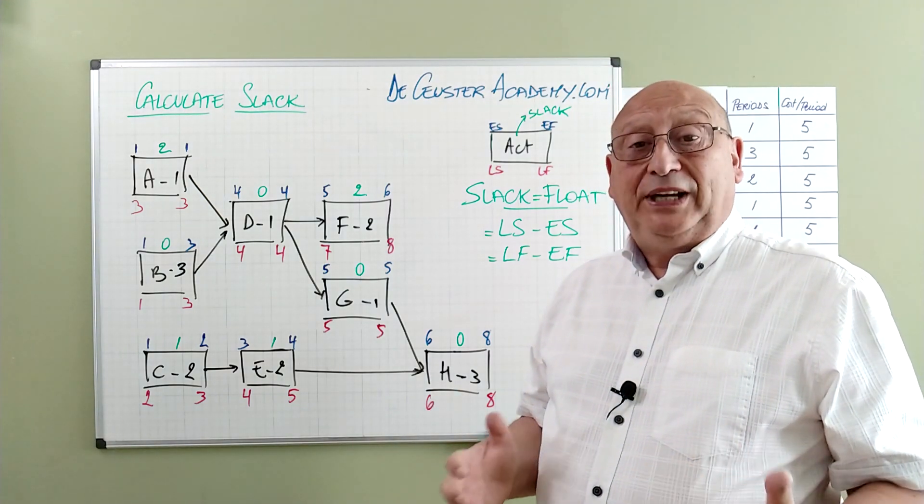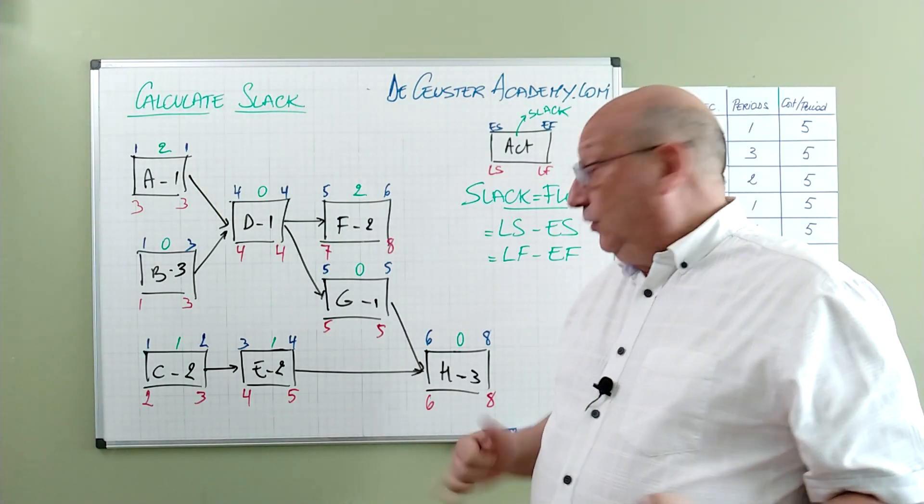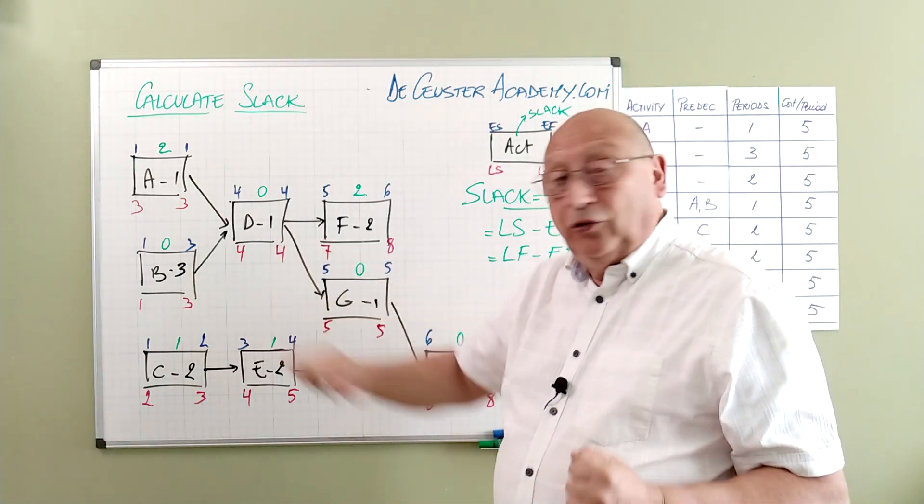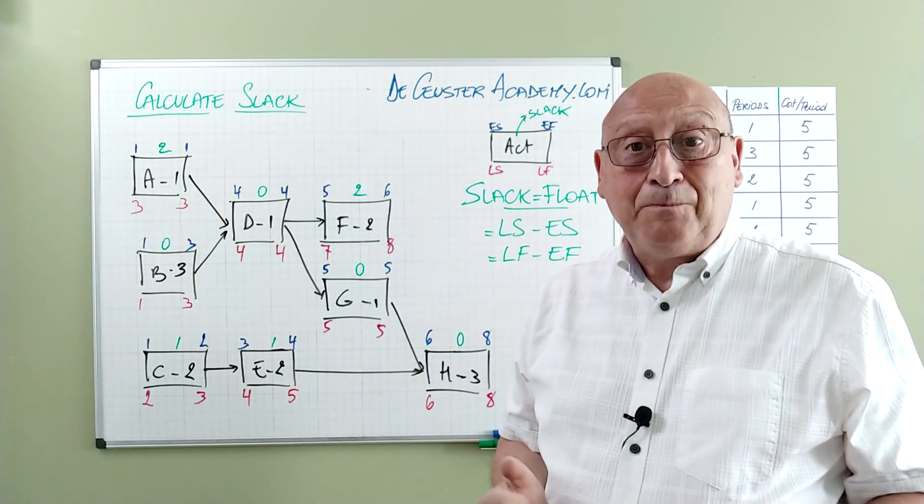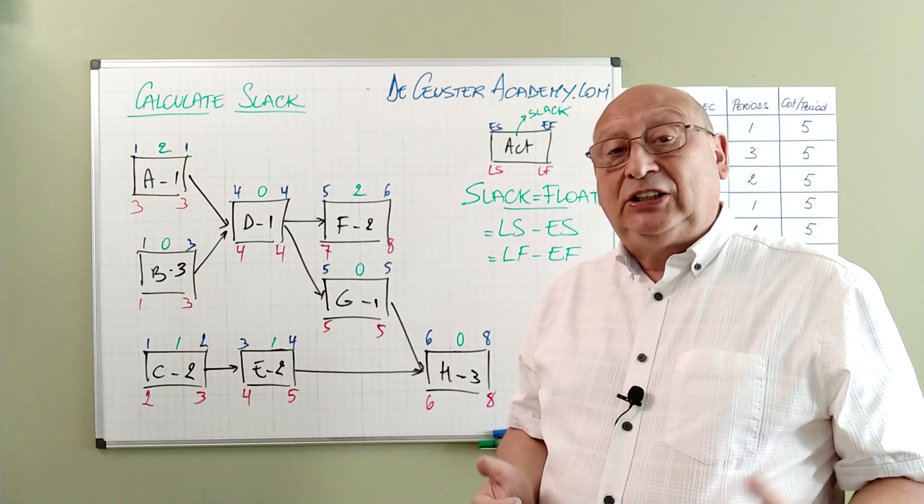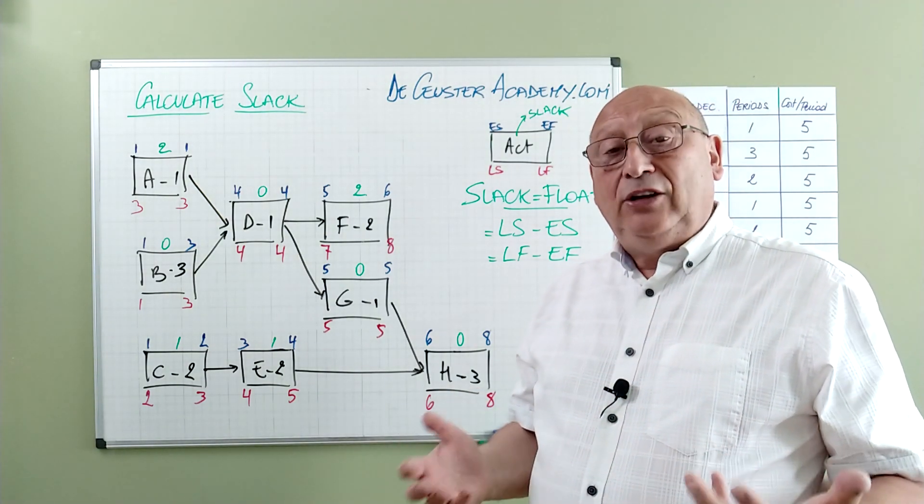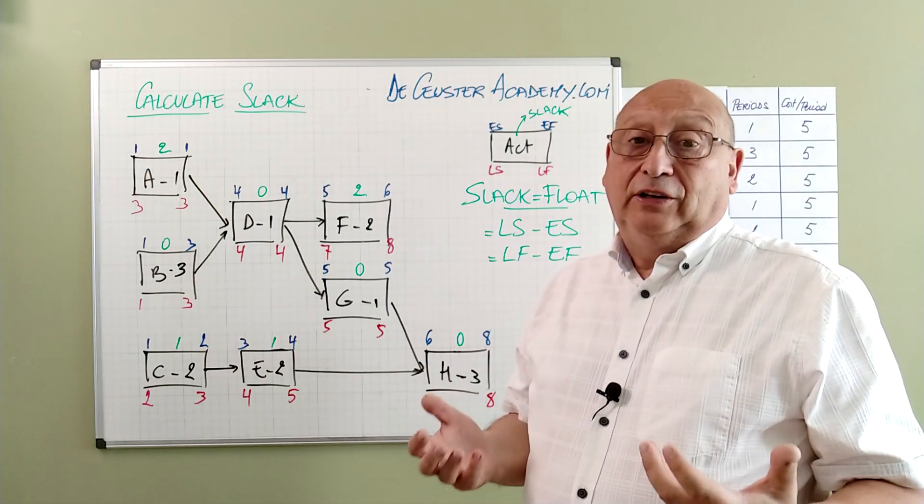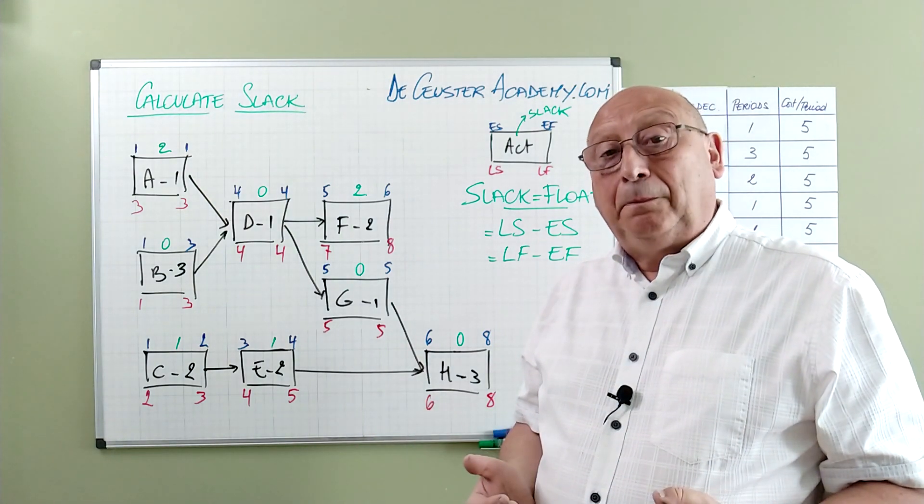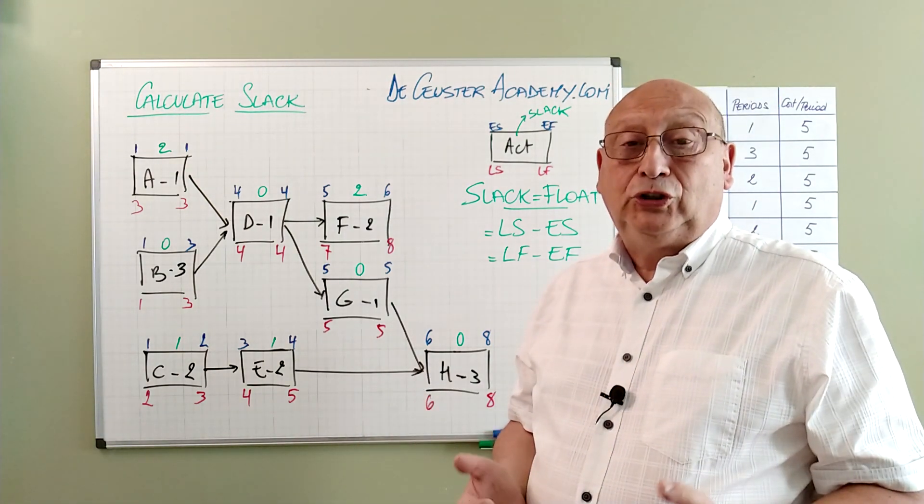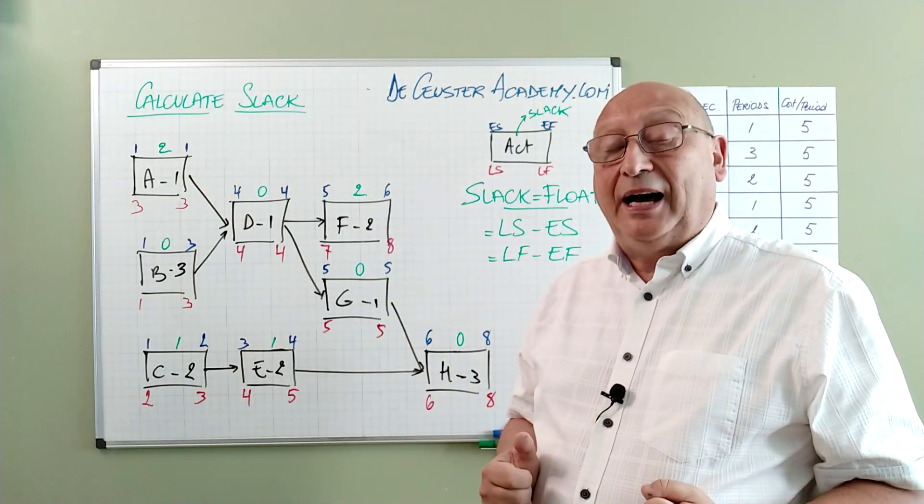Imagine that we have 10 periods to complete a project. What will happen? All the activities which are on the critical path or the activities with duration or slack 0, these activities will now have a slack equal to 2. And when you follow the rule the activities with slack equal to 0 are on the critical path, we would have the conclusion that there is no critical path. Every project has at least one critical path.